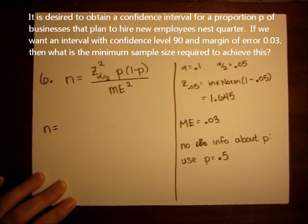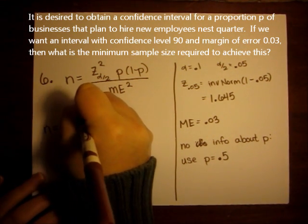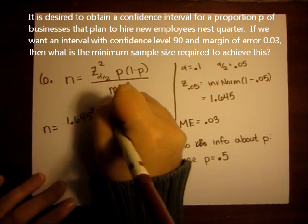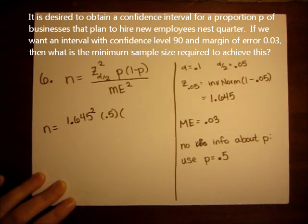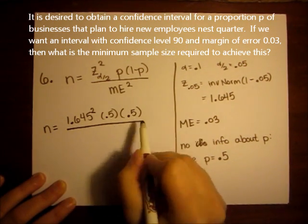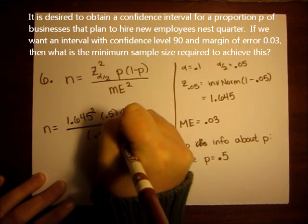So this means our value for N, or our required sample size, is 1.645 squared times 0.5 times 1 minus 0.5, which is also 0.5, divided by the margin of error, which is 0.03 squared.